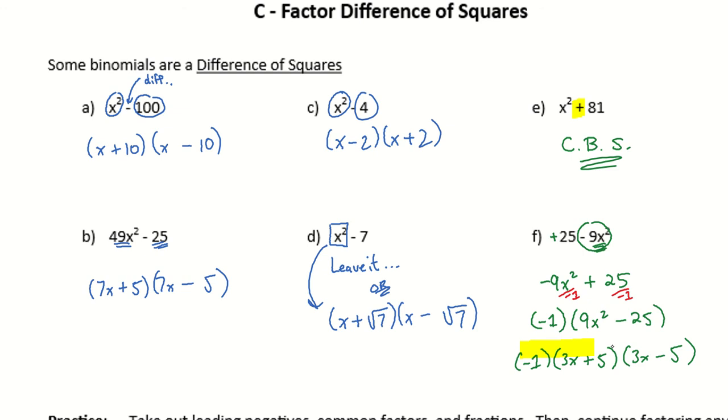So this way of writing this answer is preferable. Had you looked at this and went, oh, it's already a difference of squares - 25 is 5 times 5, and 9x is 3 times 3 - that's okay, but we're going to find it better to write it in that standardized way so that the x terms are first.